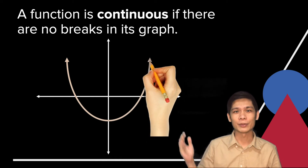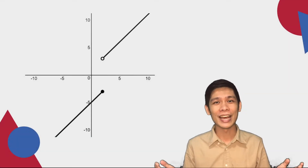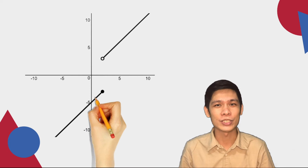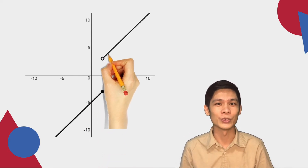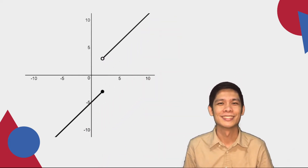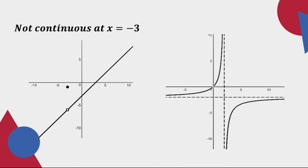Here are some examples. On the other hand, this is an example of a graph which is not continuous at x is equal to 2. This is an example of a graph which is not continuous at x is equal to negative 3, and a graph which is not continuous at x is equal to 2.